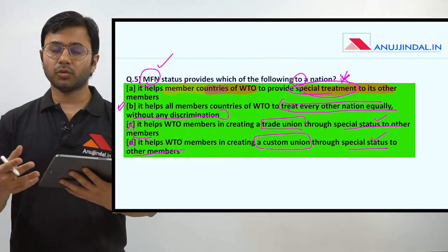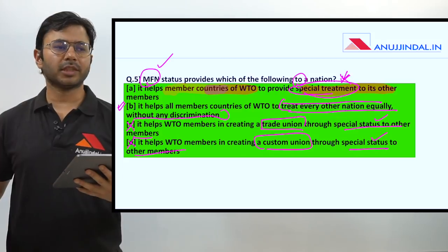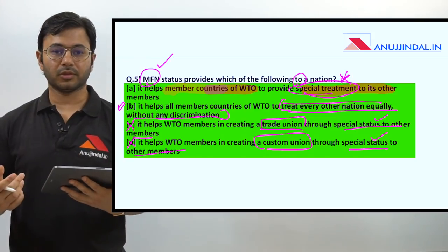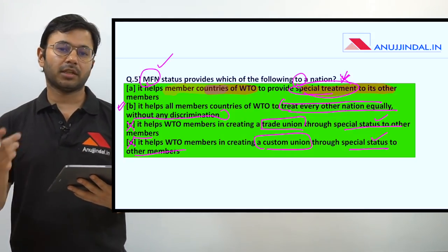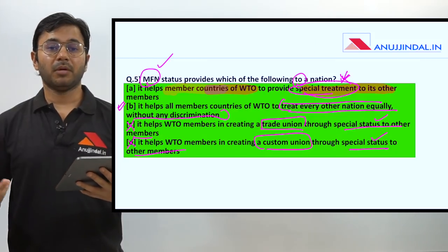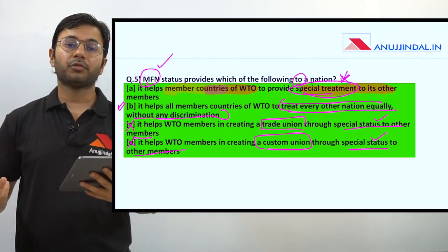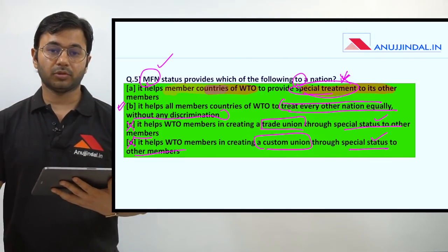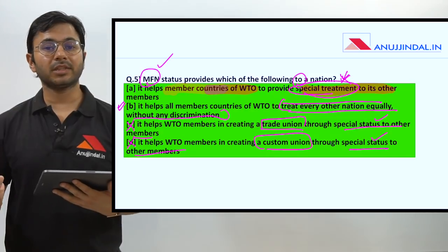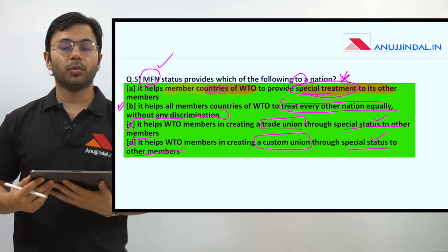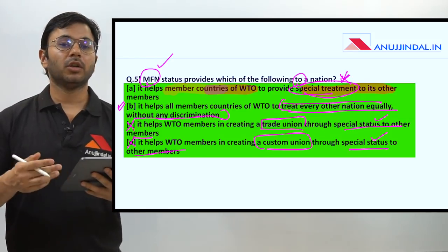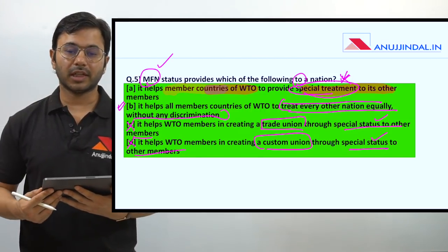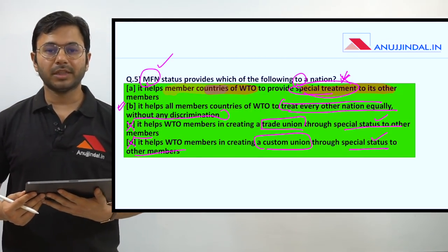For example, if India provides MFN status to all other members - which includes Bangladesh, Sri Lanka, Bhutan, Nepal, Myanmar, Thailand and so on - that means India cannot say that with Bangladesh we are going to have only 10% tariffs, but with Nepal we are going to have 20% or 30% tariffs on textiles, or with Vietnam we are going to have 50% tariffs on textiles. That cannot be the case if all these members have been provided with MFN status under WTO rules by India. I hope this lesson helped you. All the very best, take care.